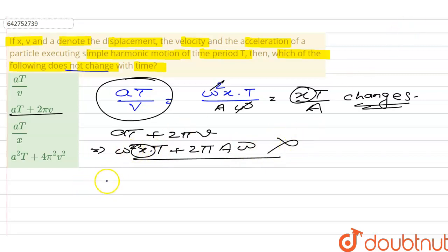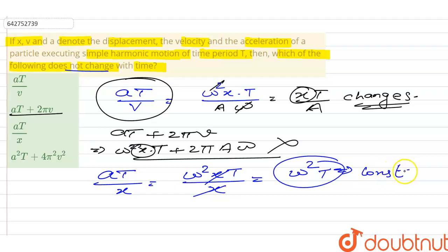Now if we talk about the third option, that is aT by x. Acceleration, the formula for acceleration is omega square x. T is as it is and divided by x. X and x are cancelled out, so the remaining part is omega square T. So we can say that this is constant, this is constant that is not changing.